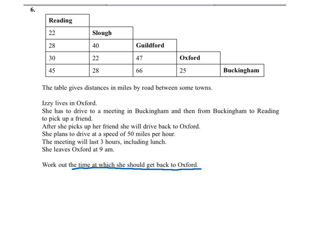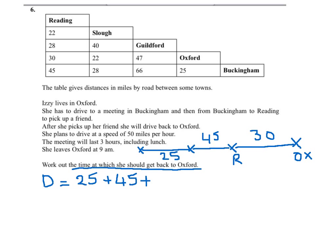What we know is that she left Oxford, then travelled for 25 miles to Buckingham. Then from Buckingham she travelled for 45 miles to Reading. Then from Reading she got back to Oxford and the distance travelled was 30. So the total distance altogether is 25 plus 45 plus 30 which is 100 miles.